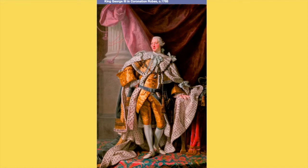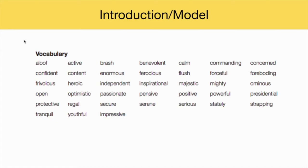Ask students to describe his appearance and chart their answers. Possible responses include majestic, regal, rich, powerful, youthful, and handsome. The word bank on this slide can be provided to help students select more sophisticated and precise words.